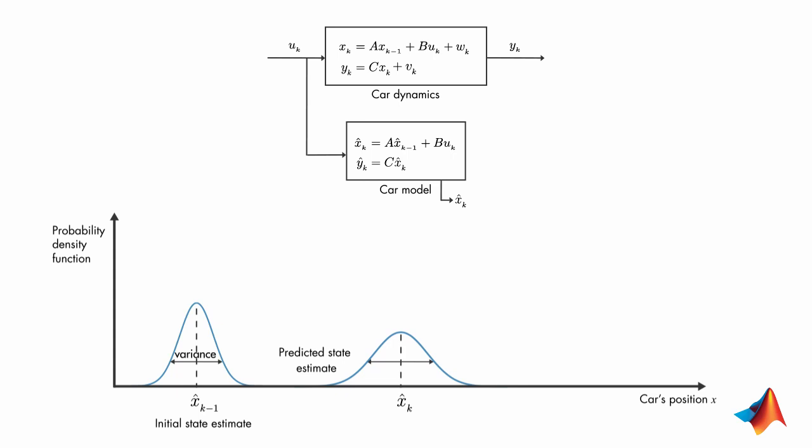As we discussed before, another source of information on the car's position comes from the measurement. Here, the variance represents the uncertainty in the noisy measurement.